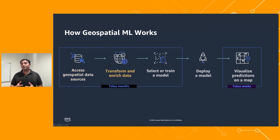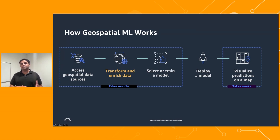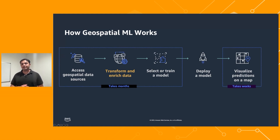Once you have access to this data, it often isn't enough. You need to transform or enrich this data to get it ready for machine learning, which requires investing in infrastructure that can process terabytes of data. For example, if you're working with satellite images, you may want to remove clouds and restore the ground information or mask the clouds. If you're working with GPS coordinates, you want to augment latitude and longitude with addresses or road segments. Once you have transformed and enriched data, you need to build high-quality labeled datasets for machine learning, often requiring a third-party vendor. Each of these steps can take weeks before you can even train a model.